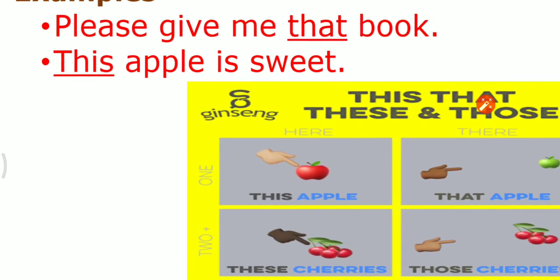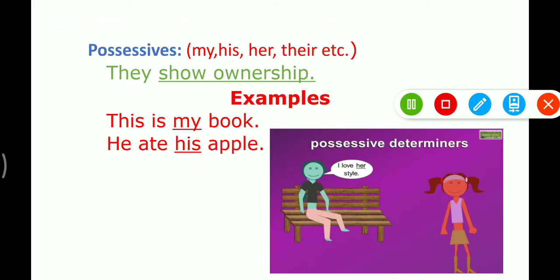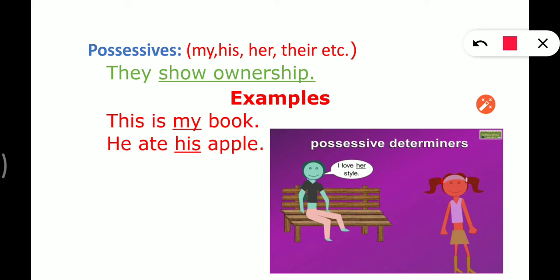Now we have next, possessives. So possessives are my, his, her, their, etc. They show ownership. For example, this is my book. He ate his apple. Now here the picture I have put here. I love her style. So this boy is talking about this girl's style, that he loves her style. So her is showing possession. I hope it is clear.